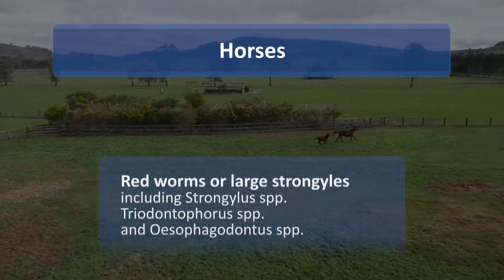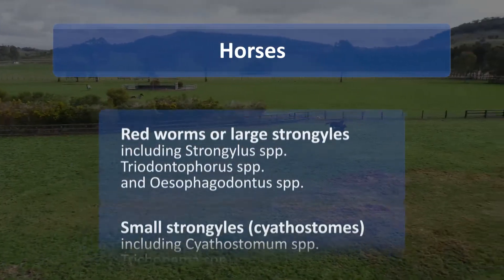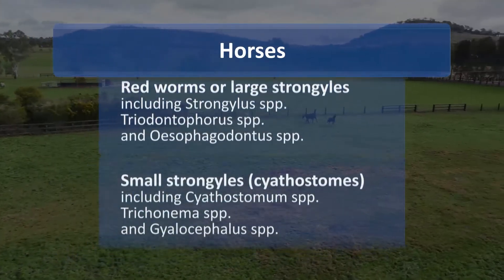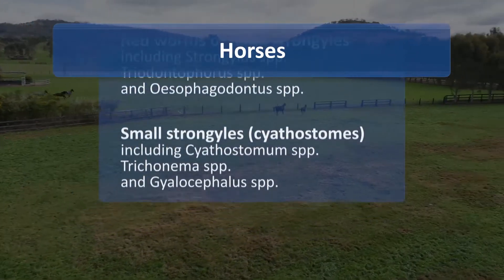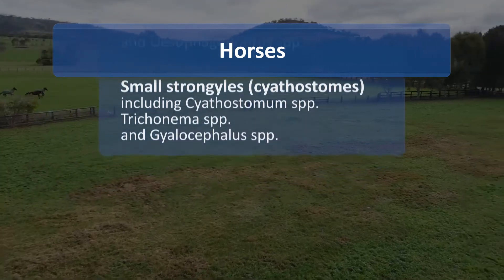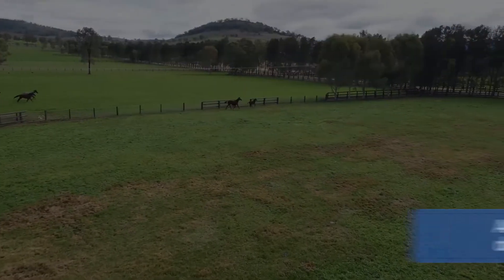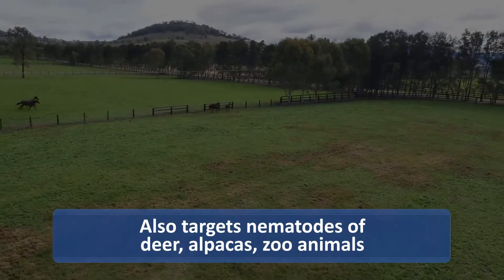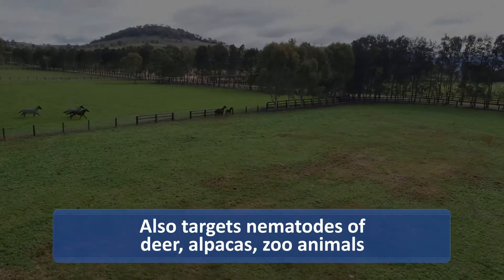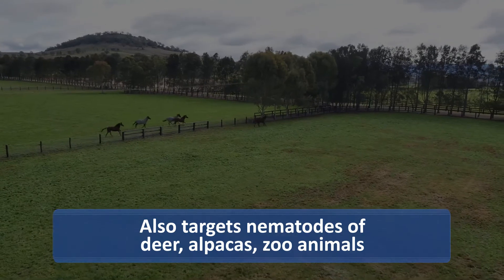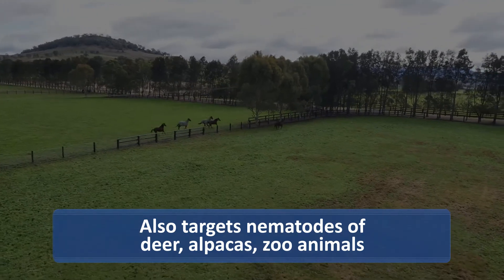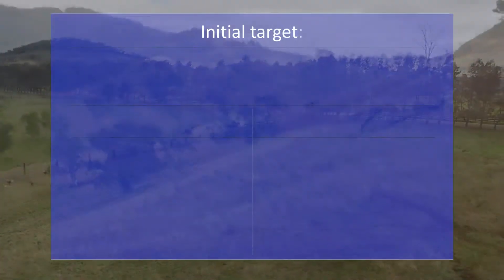For horses, Duddingtonia flagrans targets red worms, or large strongyles and small strongyles. It has also been proven to target nematodes of other grazing animals such as deer, alpacas, zoo animals and many more.